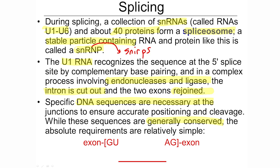If you memorize anything, this would be a good thing: at the beginning of the intron — the boundary between the exon and the intron — it starts with GU at the 5' end, and at the 3' end where the cut's going to be made, there's always an AG. There's more to the conserved sequence, but that's what always occurs right at the borders. We're going to cut here, cut here, and join those two exons together.